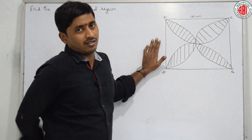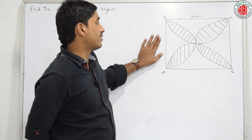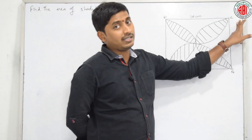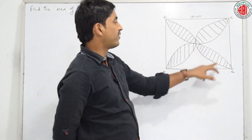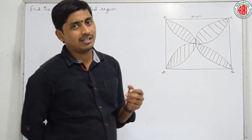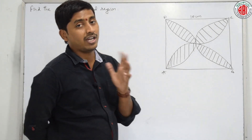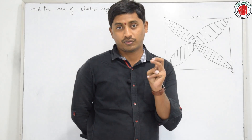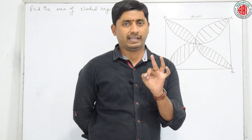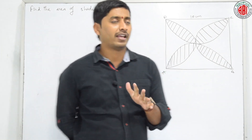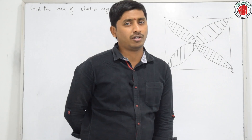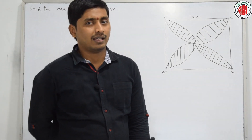Did you observe this diagram? In this diagram, ABCD is a square and he is asking us to find the area of this kind of leaf shape. How do we find it? We do not have any formula except the area of square, area of a circle, area of segment, and area of sector. So how do we do this? Do we have any idea? Just think.